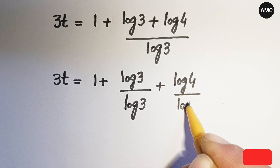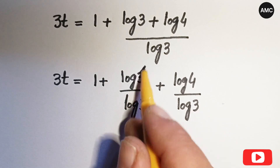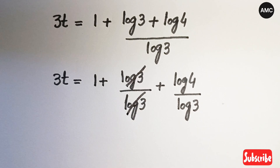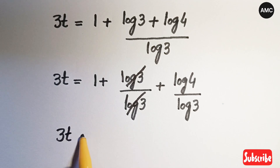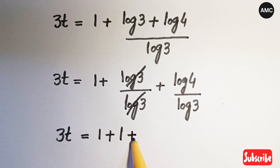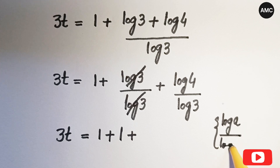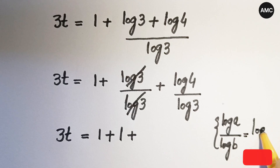This log 3 cancels with log 3, so 3t equals 1 plus 1 plus log 4 over log 3. Now applying the change of base law — log a over log b equals log a to base b — we get log 4 over log 3 equals log base 3 of 4.